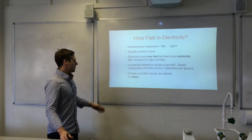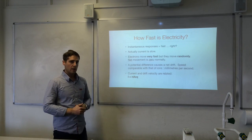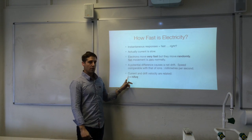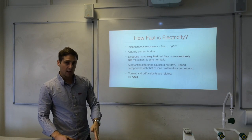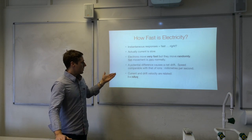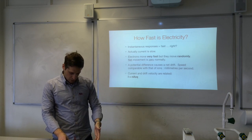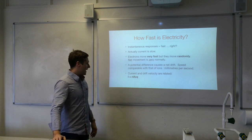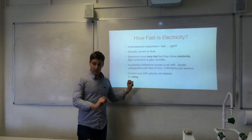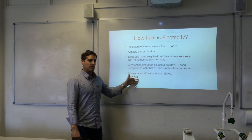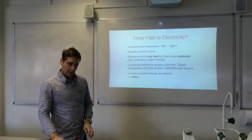The current is related to drift velocity by the equation: I equals N A V Q. N is the number density — how many charge carriers you have per unit volume; A is the cross-sectional area; V is the drift velocity; and Q is the charge of each individual particle. If you're dealing with metals, that's the elementary charge: 1.6 times 10 to the minus 19 coulombs.